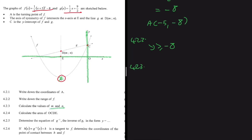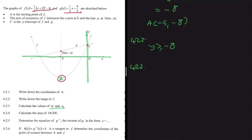For 4.2.3, let's calculate the values of m and n — the x and y coordinates of D. We can see that A, E, and D all lie on the same vertical line — the axis of symmetry — so they share the same x-value. Therefore m = -5.